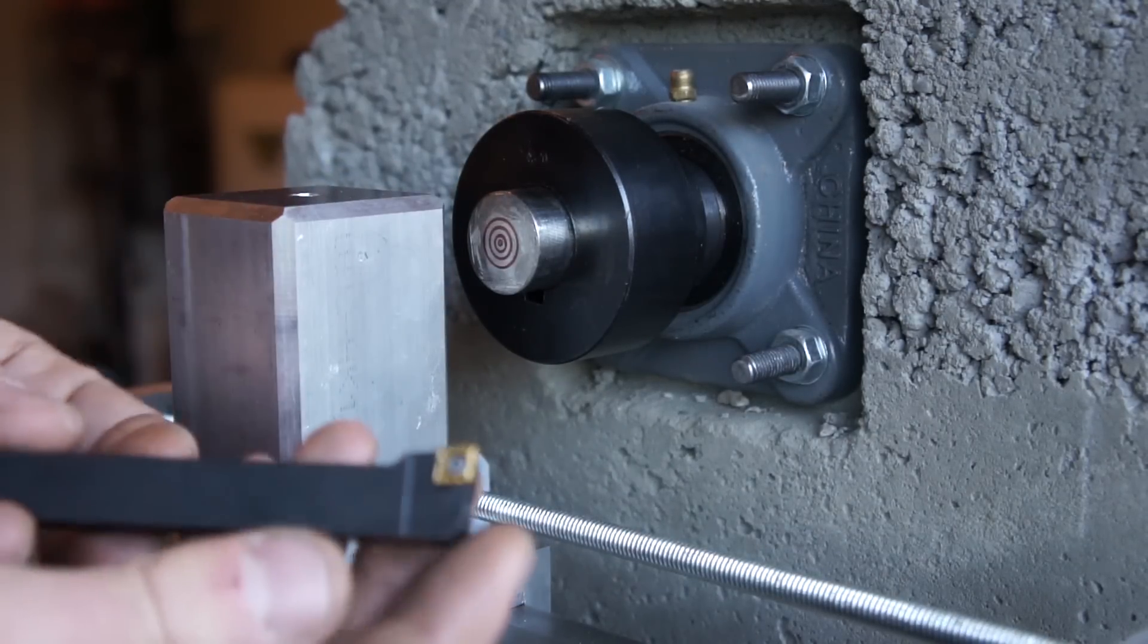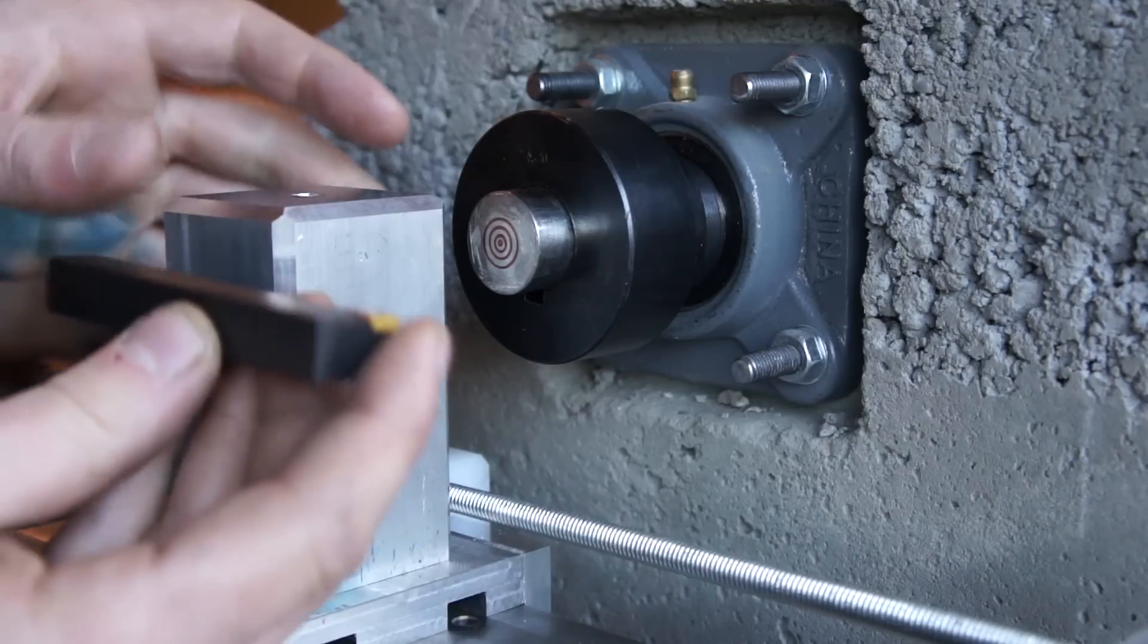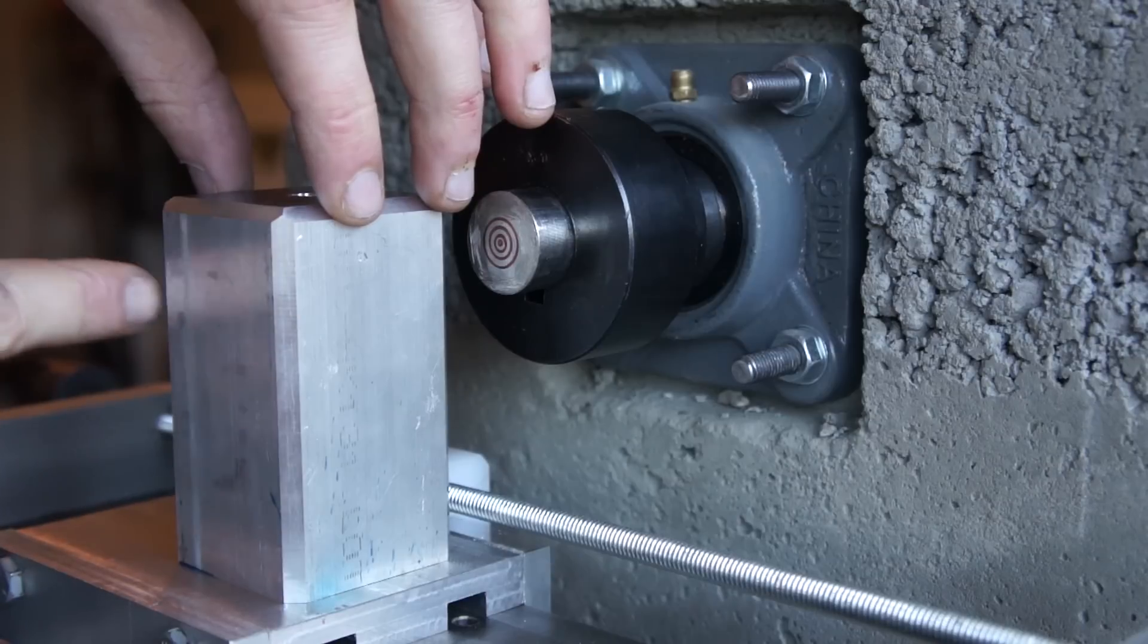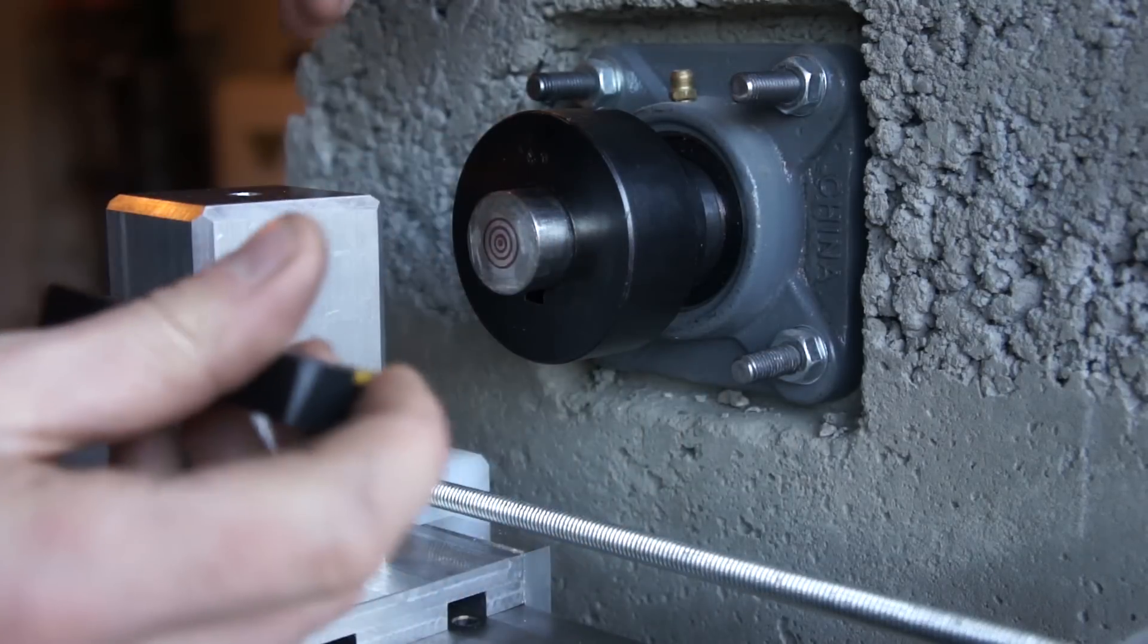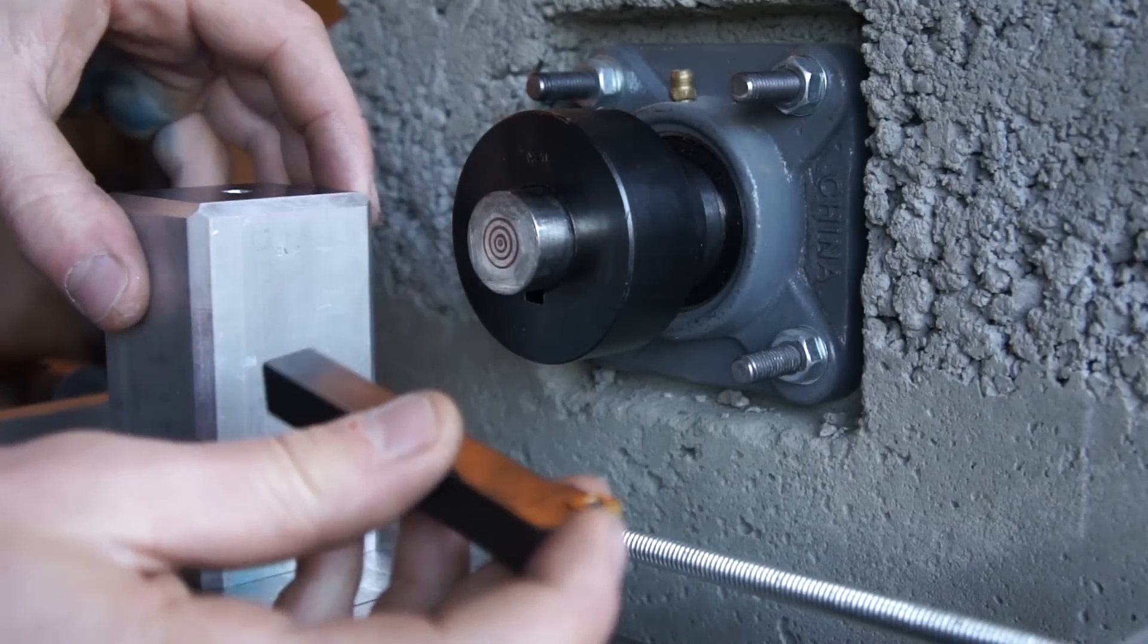What I'm going to use is this indexable tool holder for this lathe, so I'll cut a slot here in the side of this tool post that this will slide in, and there'll be allen keys just like a standard tool post.